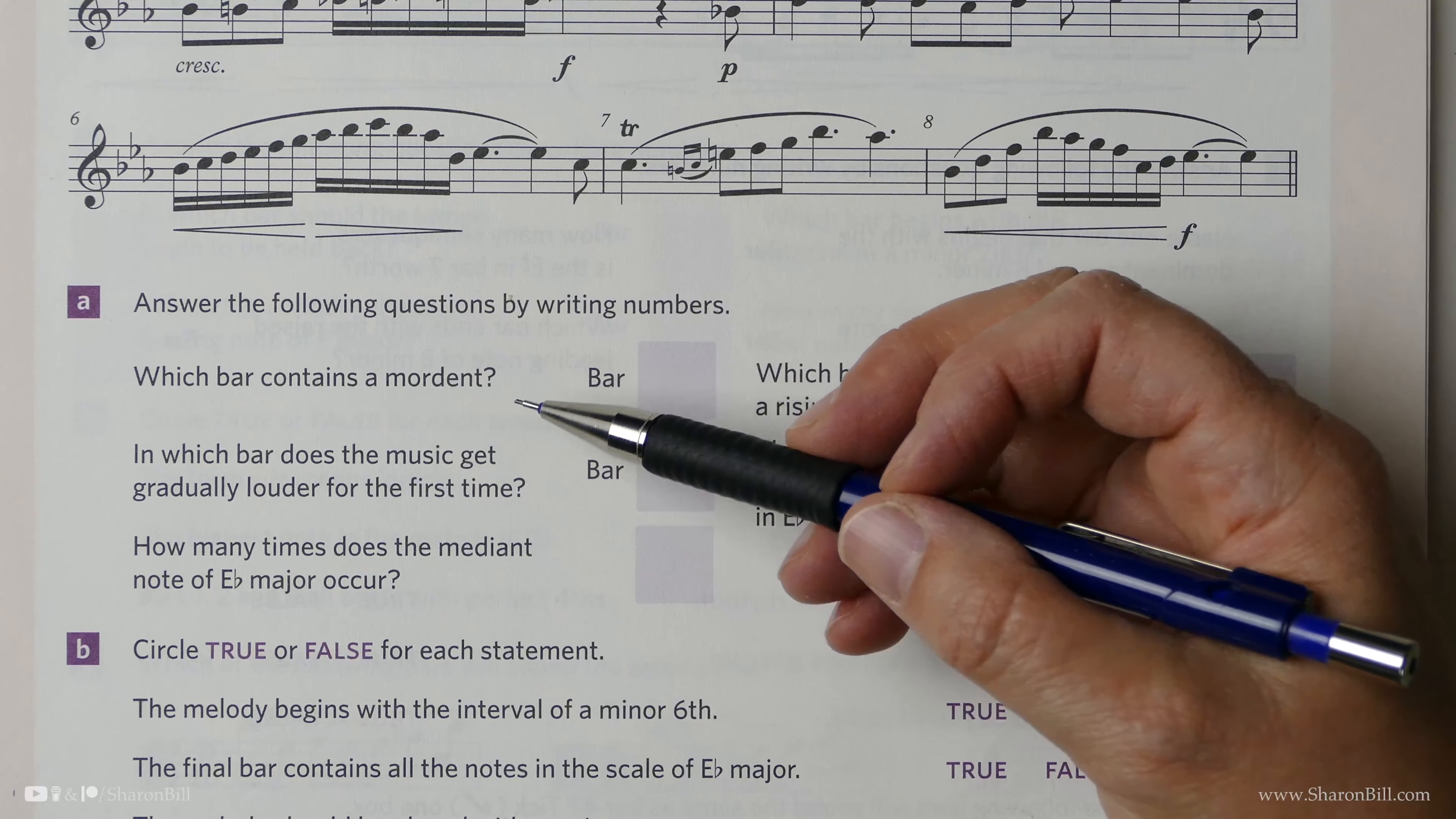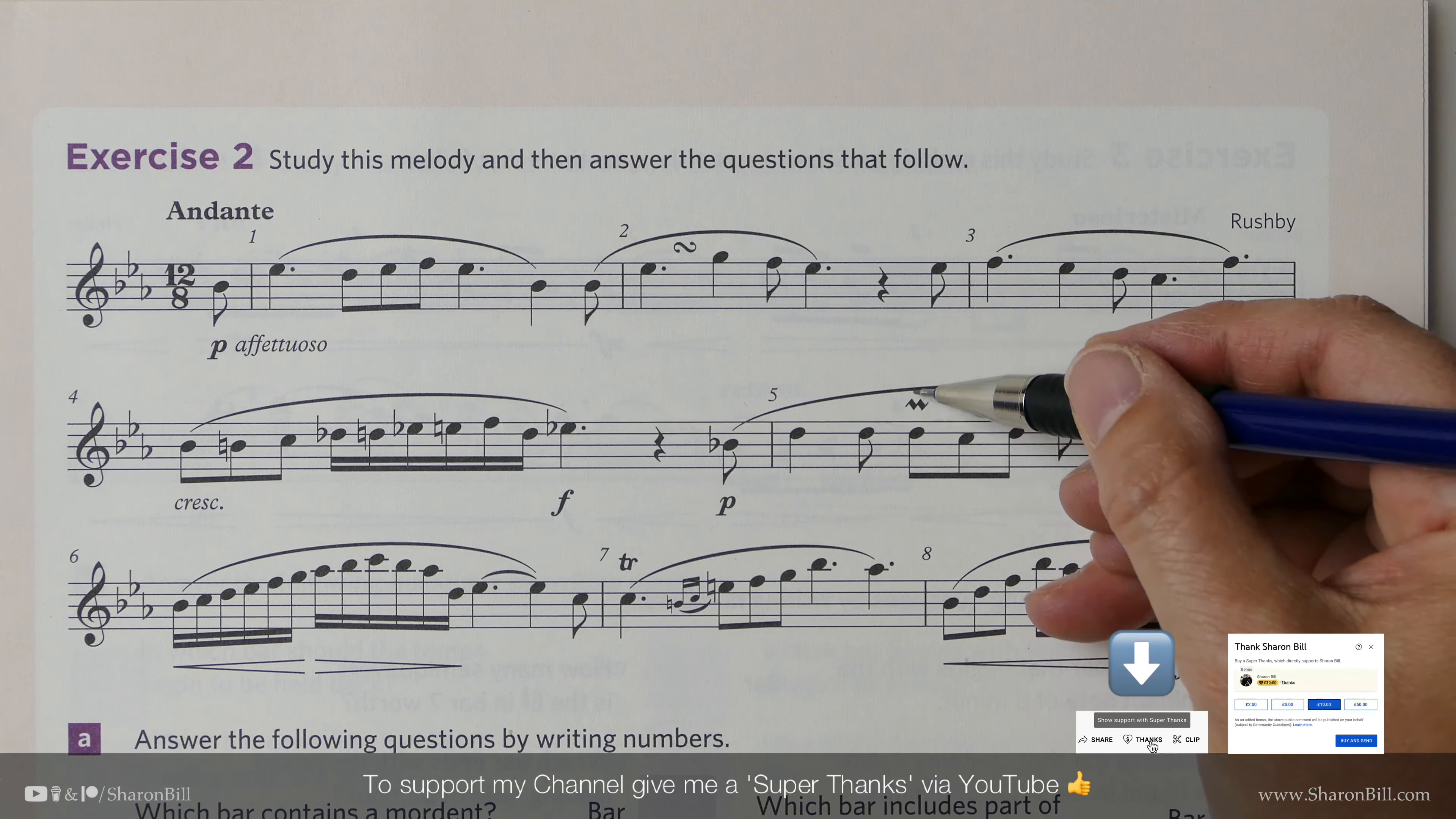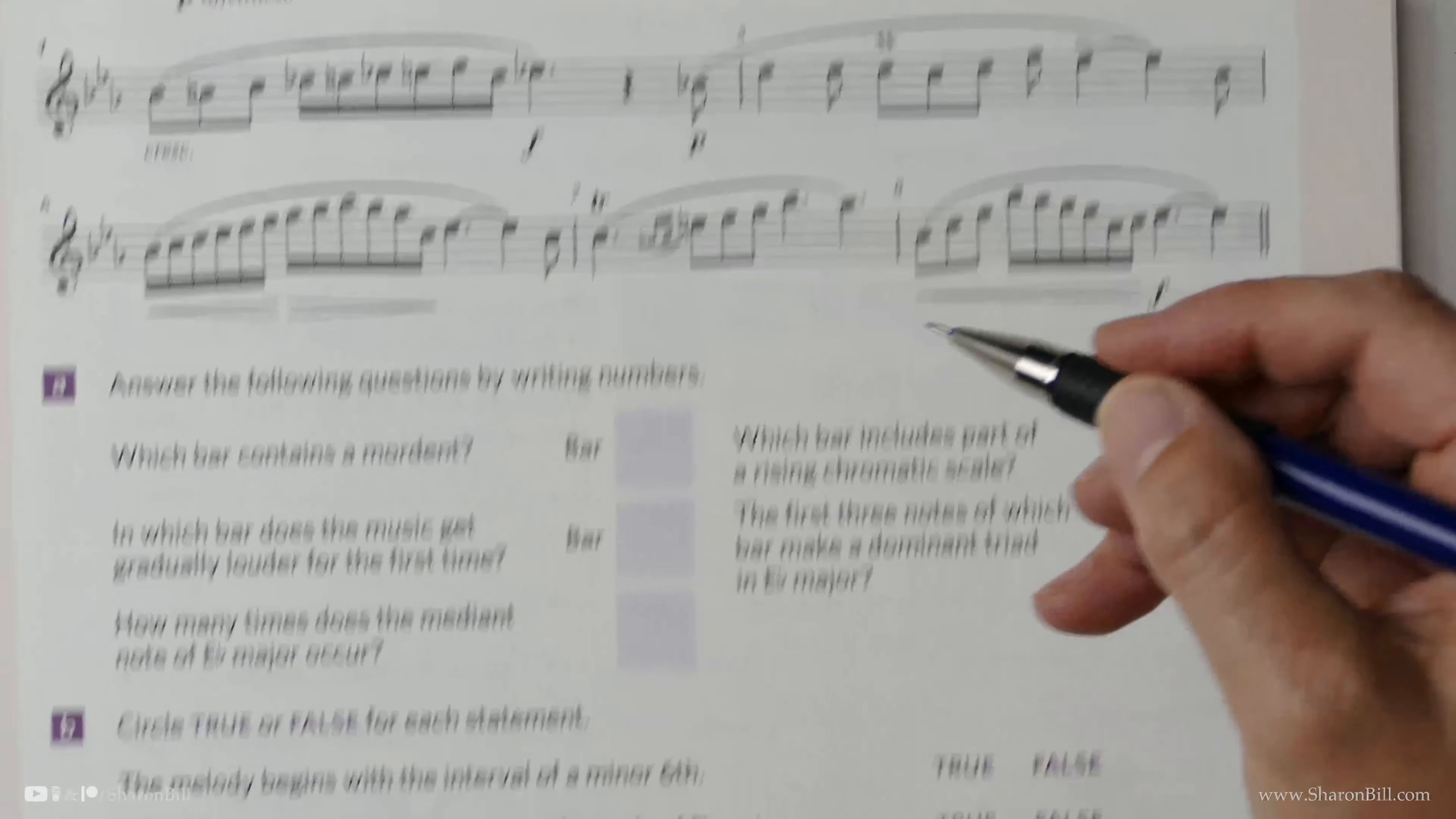We're asked here, which bar contains a mordant? So let's look through the music. We're looking at the ornaments. Well, that's a turn. That's a mordant. In actual fact, it's an upper mordant. The lower mordant has a line through it, but generally speaking, that's a mordant. Sometimes the upper mordant is just called a mordant, and then lower mordant determines the lower one. We could say upper mordant or just mordant. And so that's bar five.